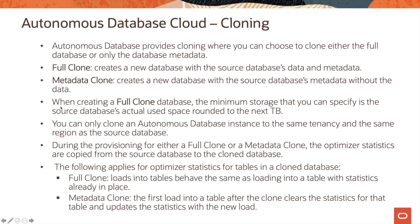Let us now look at the cloning feature of autonomous database cloud. Autonomous database provides cloning where you can choose to clone either the full database or only the database metadata. A full clone creates a new database with the source database's data and metadata. A metadata clone creates a new database with the source database's metadata but without the data. When creating a full clone, the minimum storage you can specify is the source database's actual user space rounded to the next terabyte.